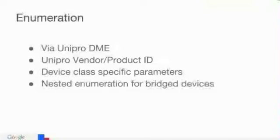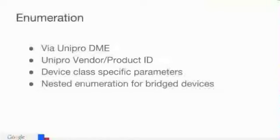Enumeration — Juergen talked about this, so I won't belabor it. Enumeration is via UniPro DME, and there's a UniPro vendor and product ID that every module developer will get. When we have functional drivers — also in the DDB — there are device class-specific parameters defining screen resolution and things like that. There's also nested enumeration for bridge devices, meaning that if you plug in a device that has a UniPro-to-USB bridge, the operating system will then enumerate your USB device, or similarly with SDIO devices.